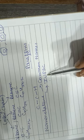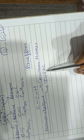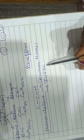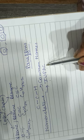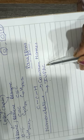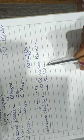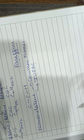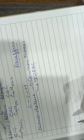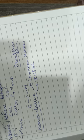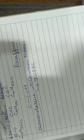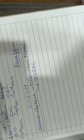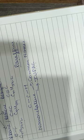IUPAC stands for International Union of Pure and Applied Chemistry. It is an organization dedicated to nomenclature. In the IUPAC system, you need the longest chain, correct numbering, the lowest sum of locants, and identification of substituents.